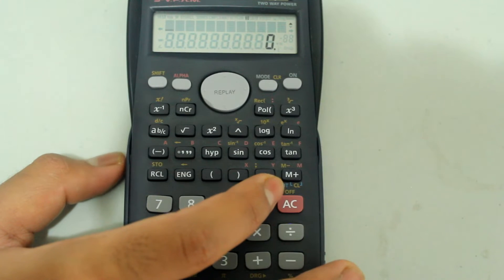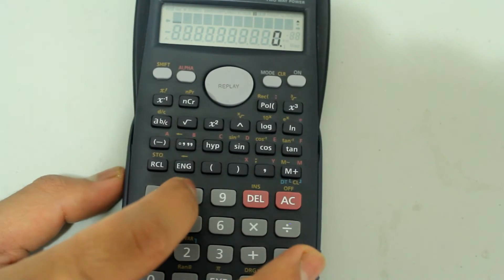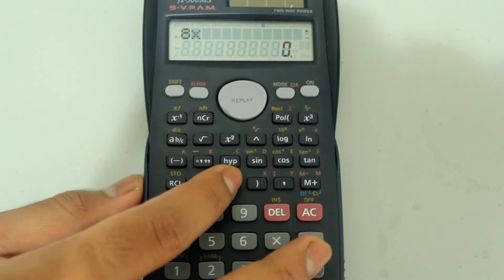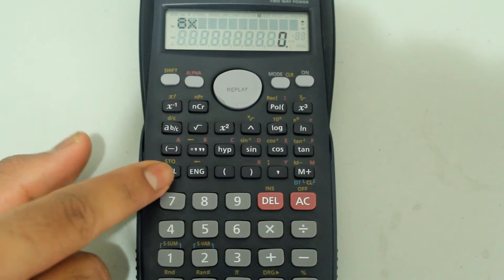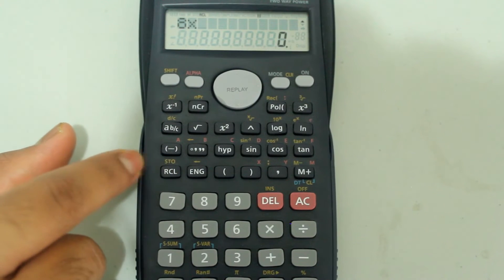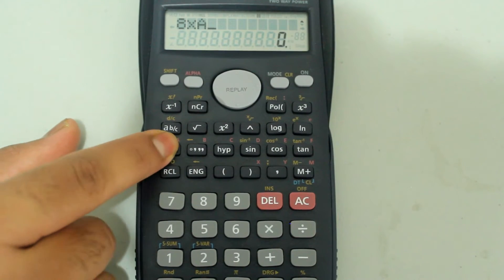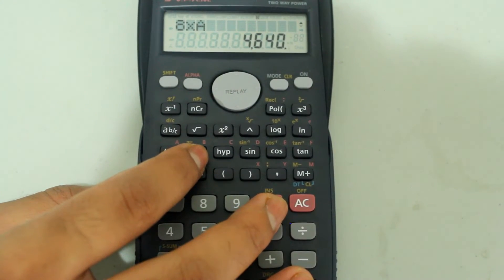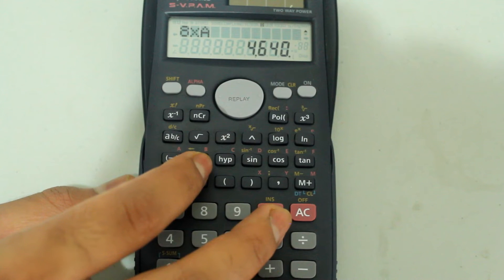Now I can use this for calculations. Let's say I want to do 8 times the letter A. To recall the letter A, just press the recall button and type in A. If I press equals, you see that I get the answer, which is 4640.